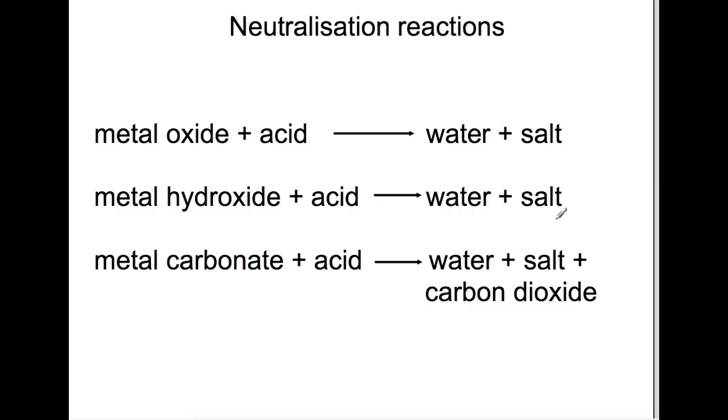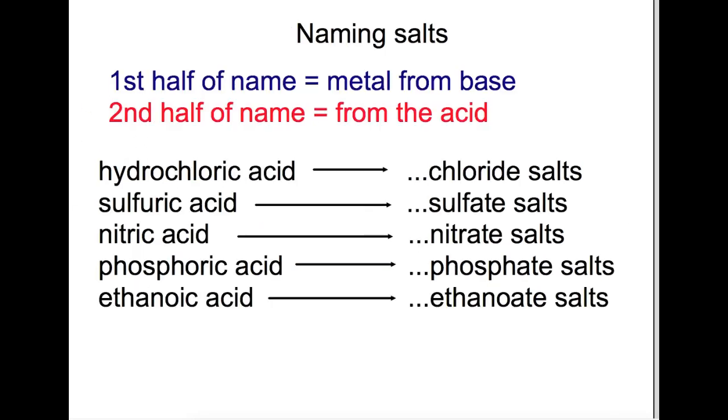When you're naming a salt, the first part of the salt's name is always the name of the metal that was part of the base. The acid you need to take and change: hydrochloric acid produces chloride salts, sulfuric acid produces sulfate salts, nitric acid produces nitrate salts, and phosphoric acid produces phosphate salts. And acids such as ethanoic acid can produce ethanoate salts.